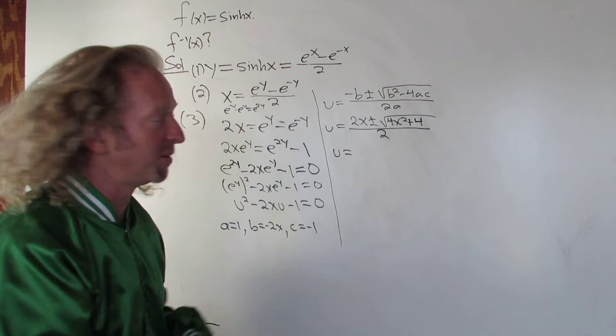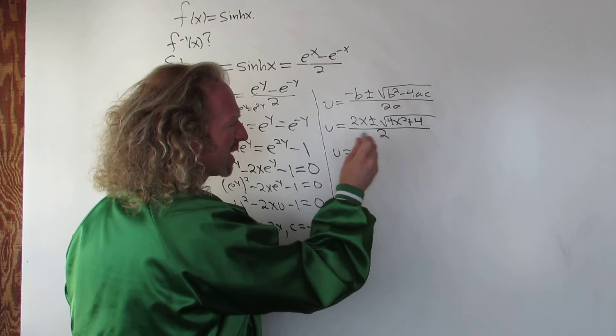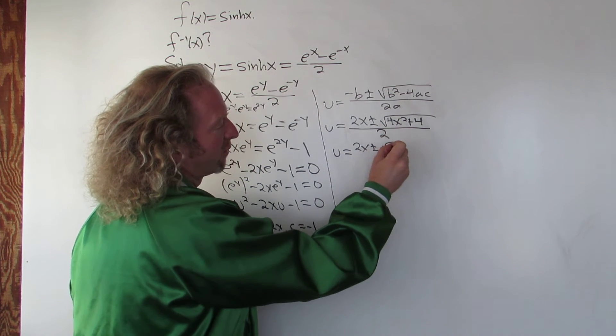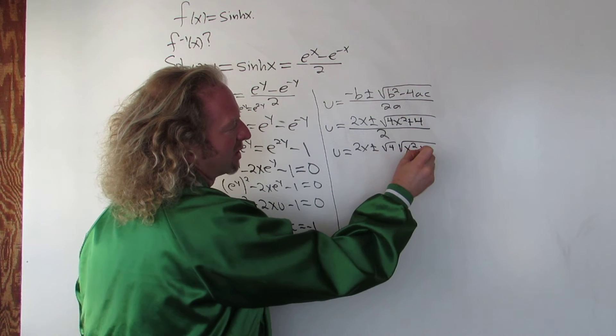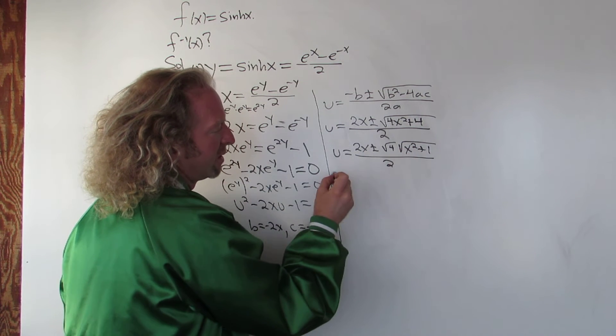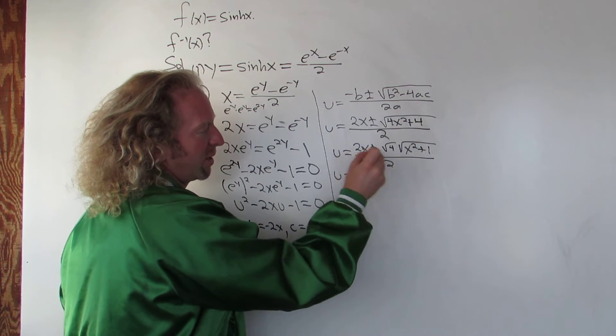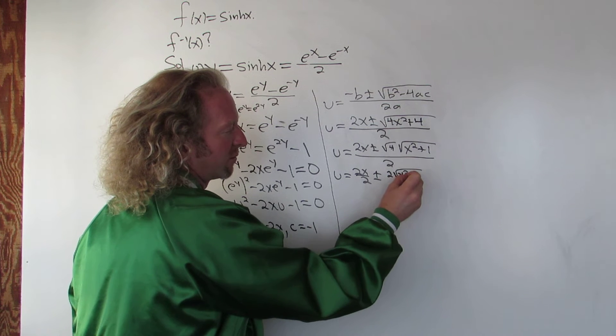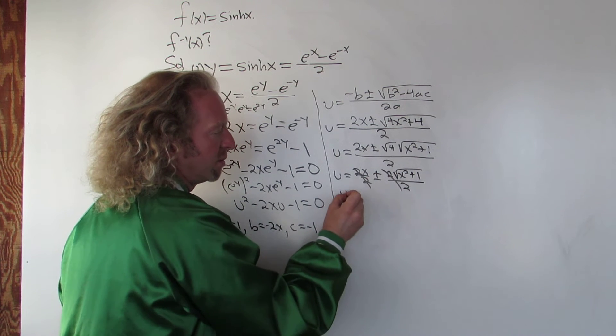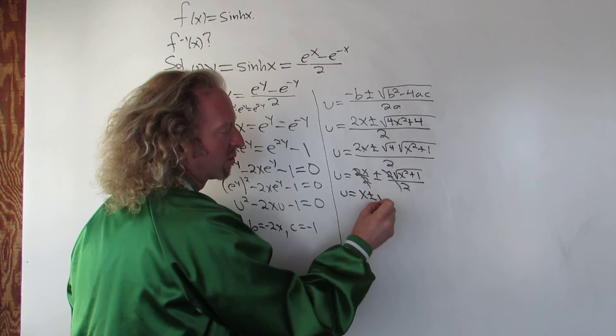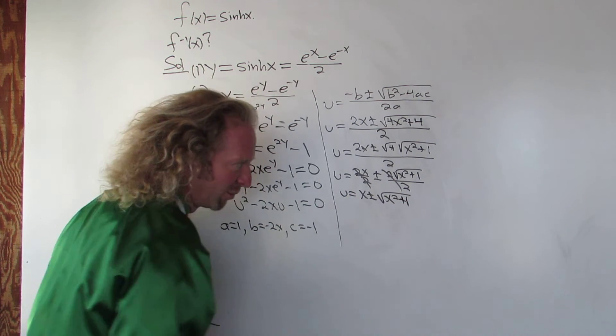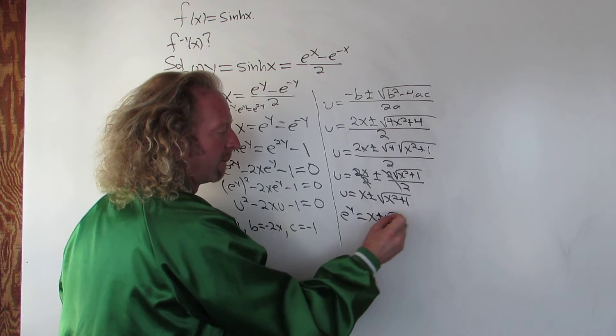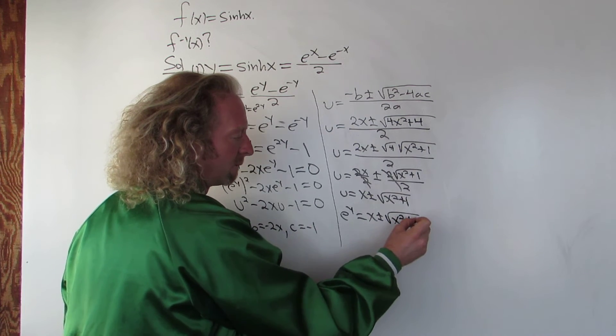So u is equal to, let's see what this is. Well, I guess you can't do much. You can pull out a 2 here. Check it out. You can pull out a square root of 4. So that would give us x squared plus 1 over 2. So u is equal to 2x over 2, breaking it up, 2x over 2, plus or minus 2 square root x squared plus 4, plus 4, over 2. Boom, boom. So u is equal to x plus or minus square root x squared plus 1, plus 1. So u is e to the y, so we end up with this.